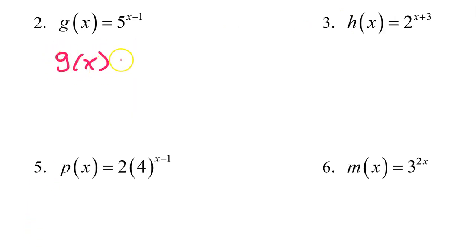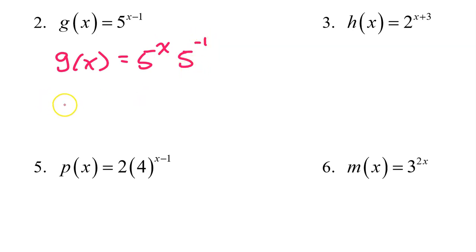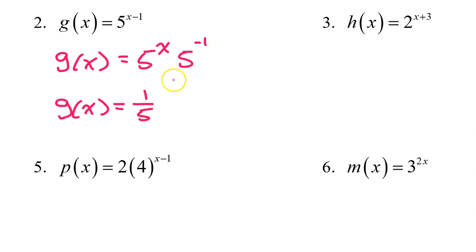g of x can be rewritten as 5 to the x power times 5 to the negative 1 power. 5 to the negative 1 power is the same thing as 1 over 5, and putting that in front leaves us with 1 fifth times 5 to the x power.